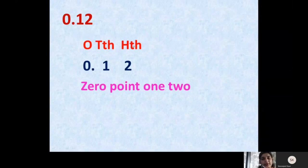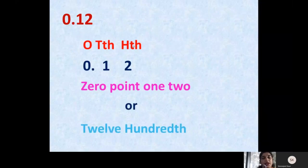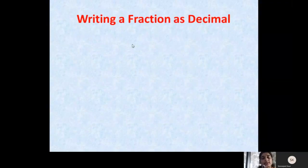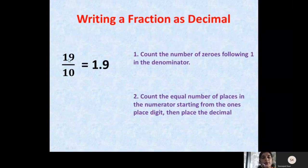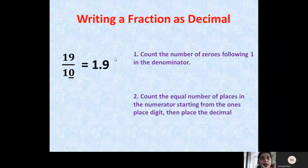Now let us learn how to write a given fraction as a decimal. Let us take the fraction 19 by 10. When we have to convert this fraction to decimal, we first count how many zeros are following 1 in the denominator. In the denominator we have 10, so after the 1 we have one zero. We write the numerator 19, start from the right hand side, go towards left, count 1 digit, and then put a decimal. So the decimal number corresponding to 19 by 10 is 1.9.